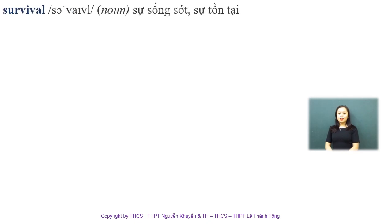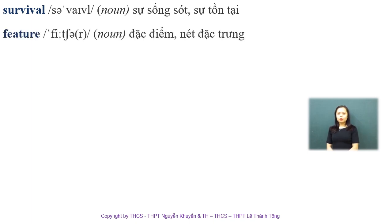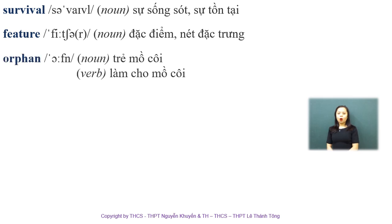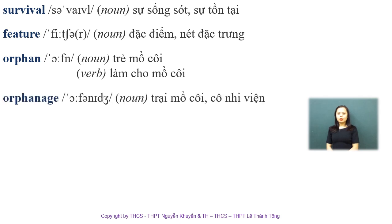'Survival' is a noun and the stress is on the second syllable — 'survival.' It means sự tồn tại, sự sống sót. 'Feature' is a noun and the stress is on the first syllable. 'Orphan' can be a noun meaning trẻ mồ côi, or a verb meaning làm cho mồ côi. In this context, we use it as a verb. Stress is on the first syllable.